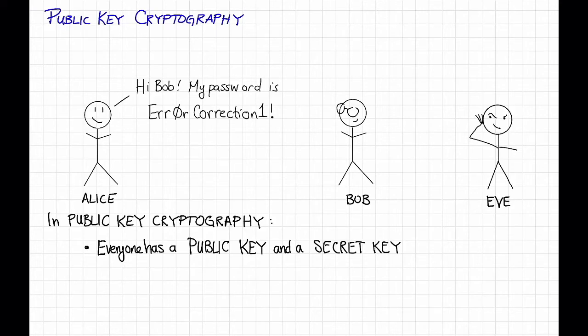So for example, maybe Bob has a secret-key, SK-sub-Bob, which only he knows. And then he also has a public-key, PK-sub-Bob, which he publishes and announces to the world.